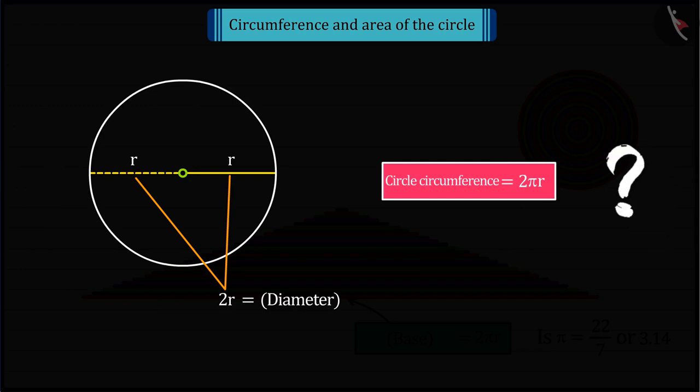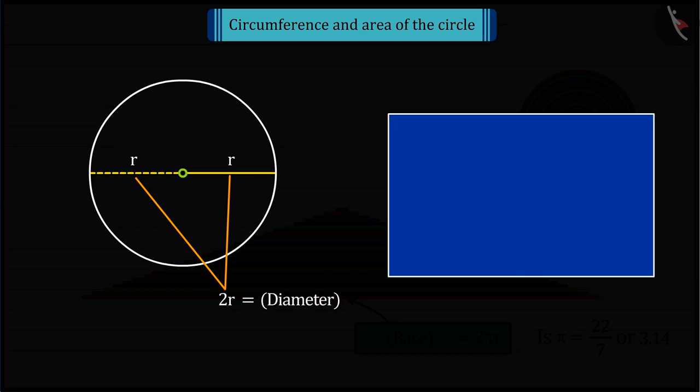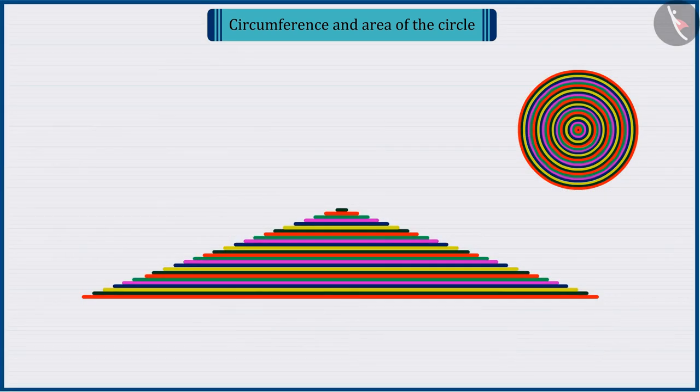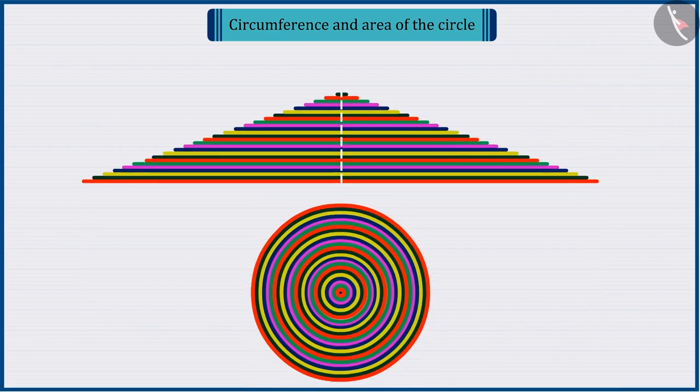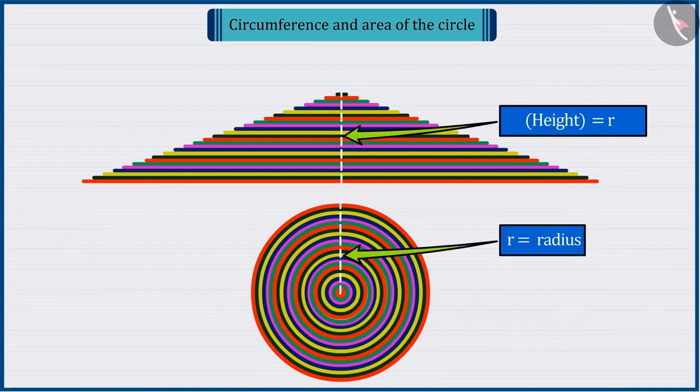Absolutely correct. Since we know that the circumference of a circle and its diameter has a constant ratio, which is represented by pi, and by solving it, we get the circumference of the circle. And the height of this shape is nothing else but the radius of the outer circle, which we present using r.